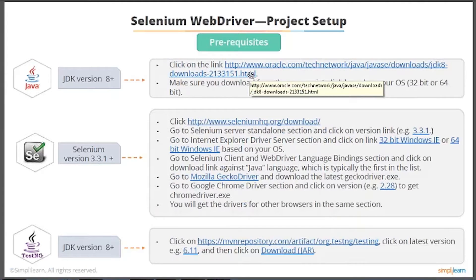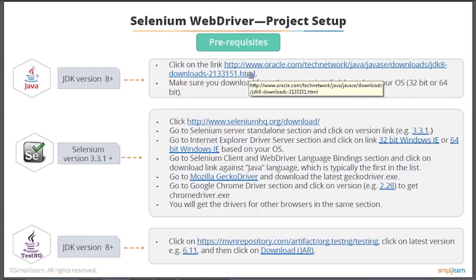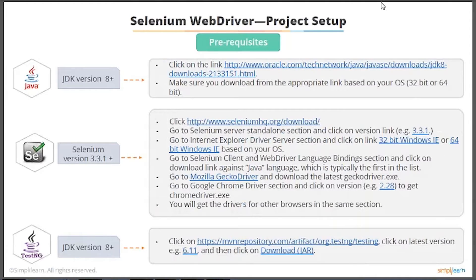Selenium 3.3.1 is mentioned here, but the latest version is 3.5.3. You can simply download the latest version from the Selenium website. We'll be talking about TestNG at a later point, so as of now you don't need to download it. Just set up Selenium and Java in your system and make it ready.